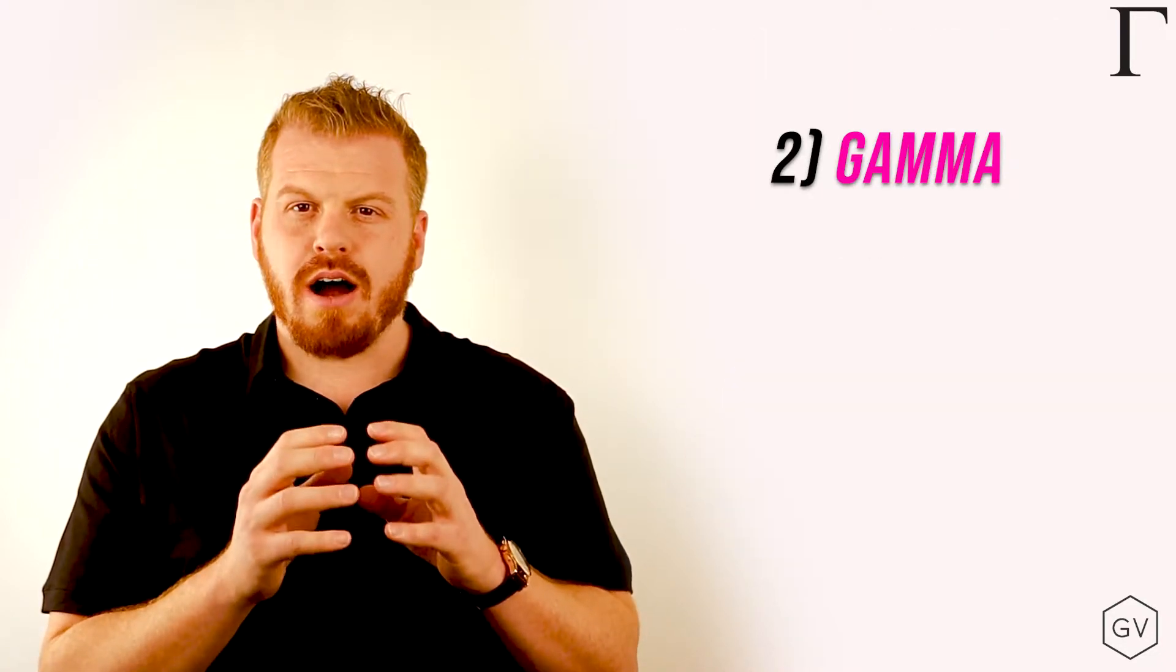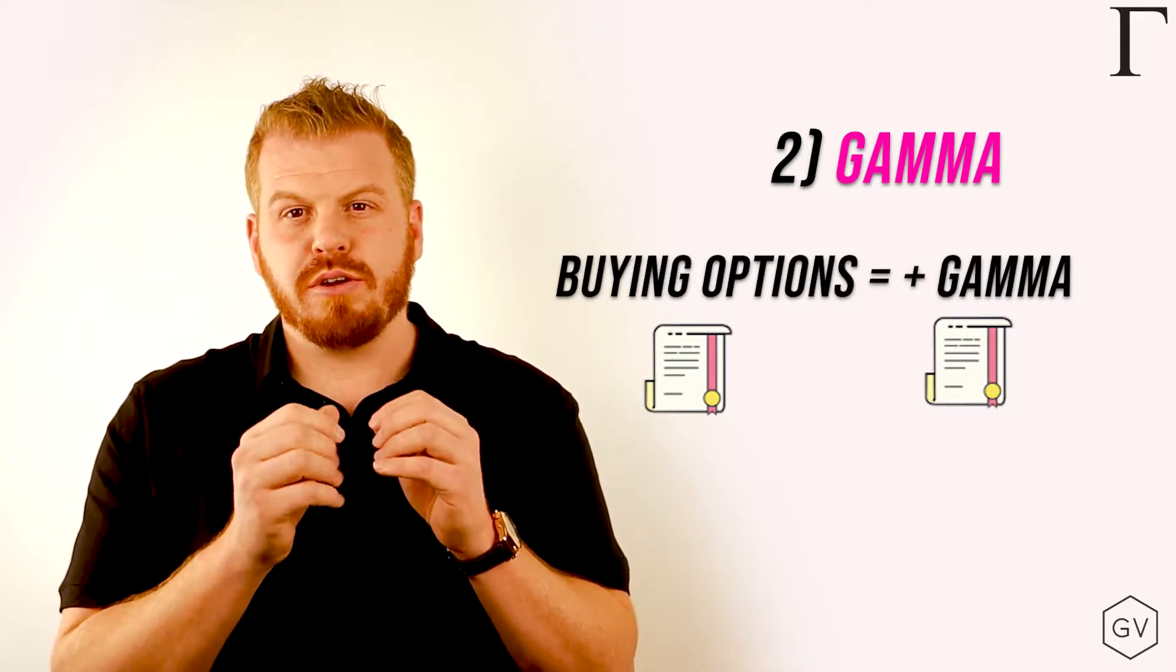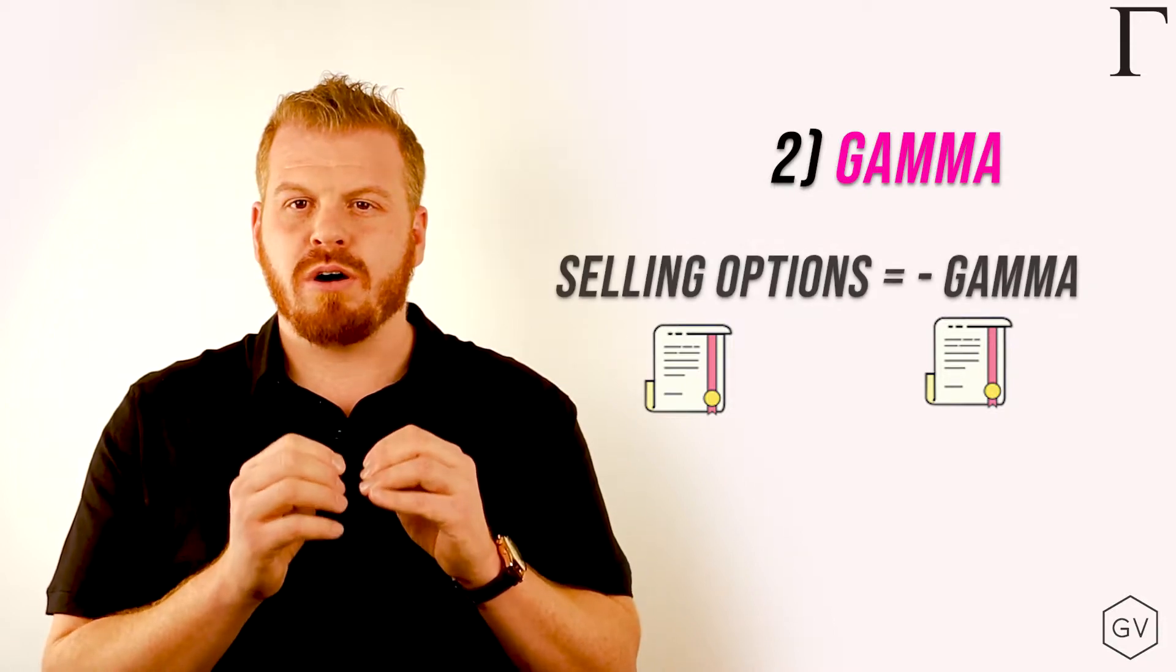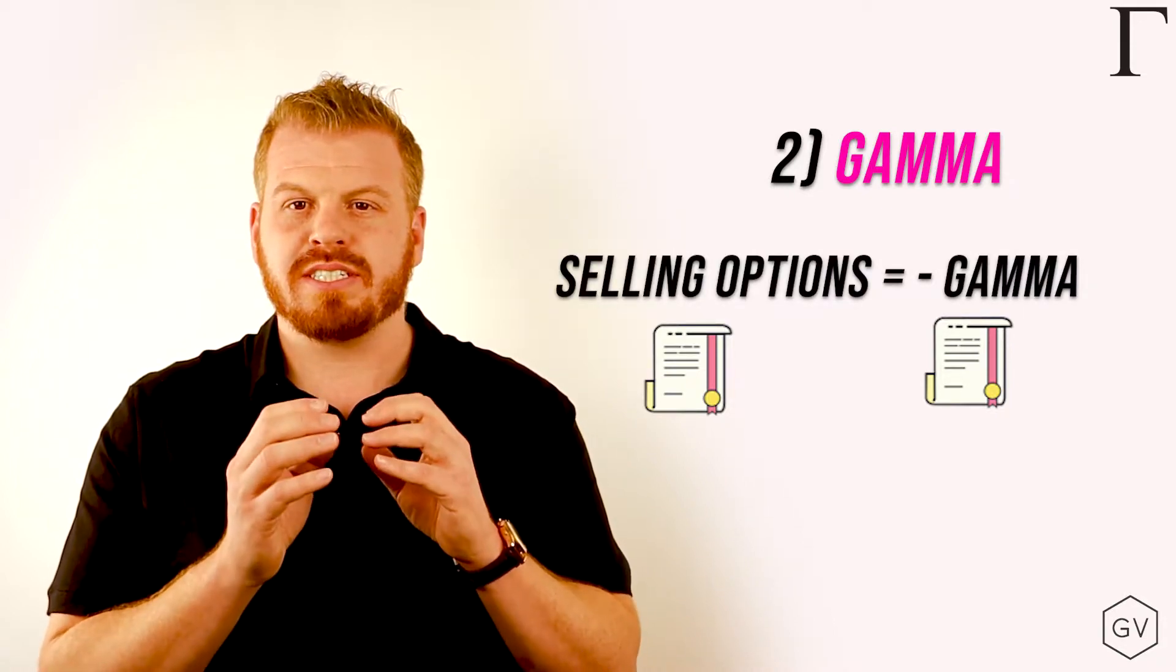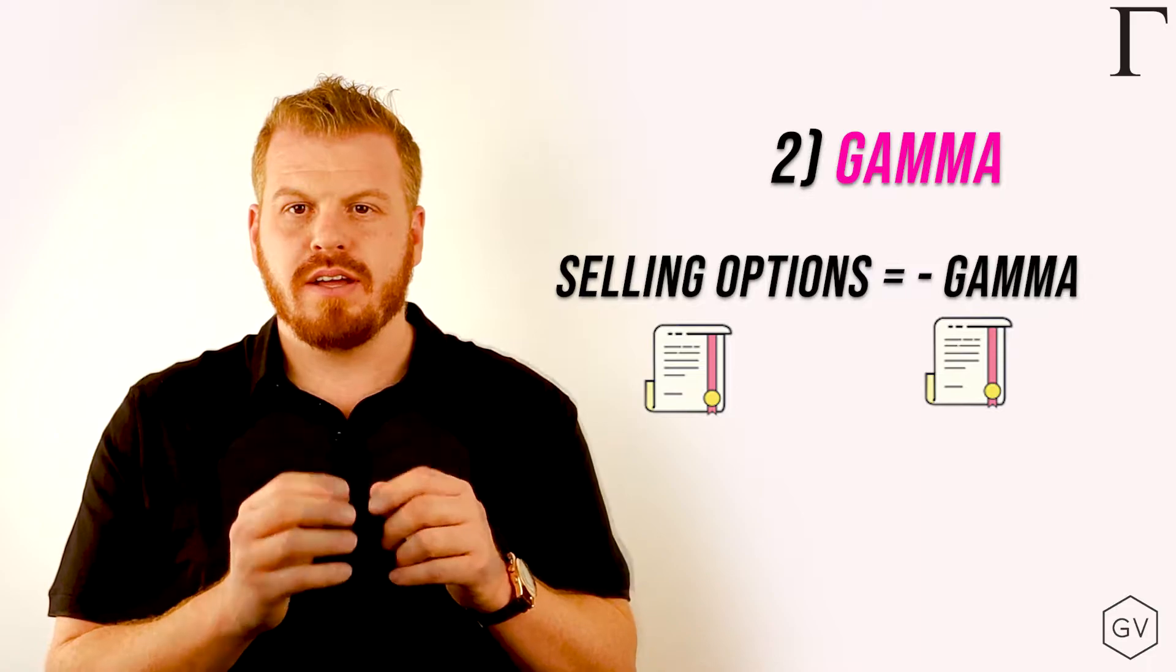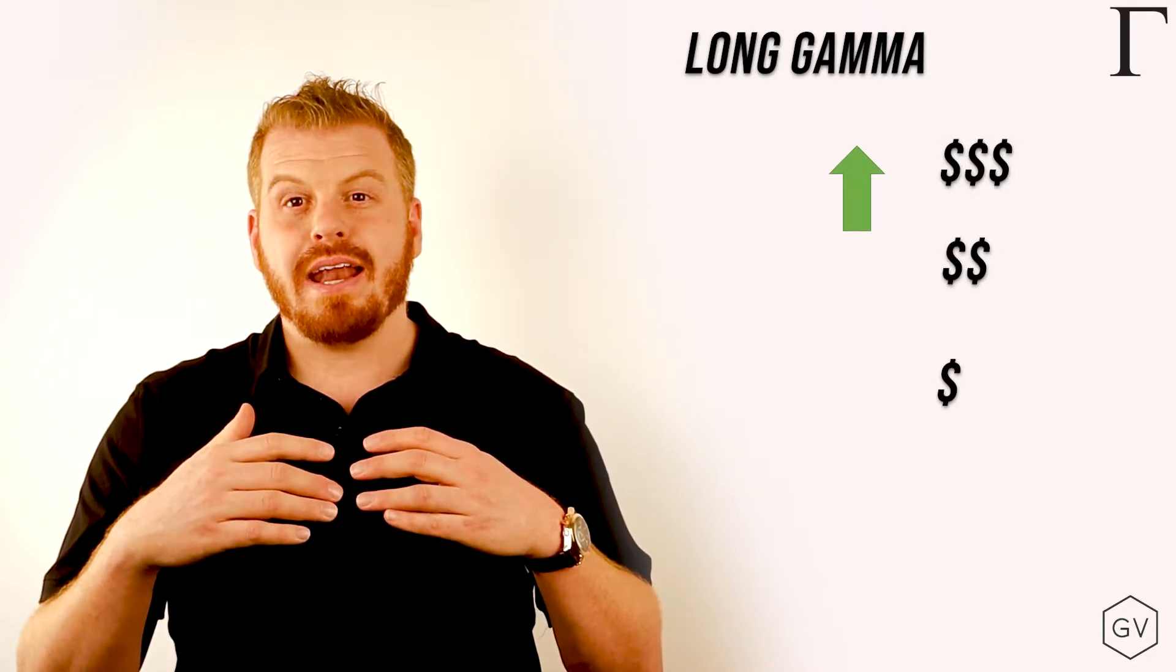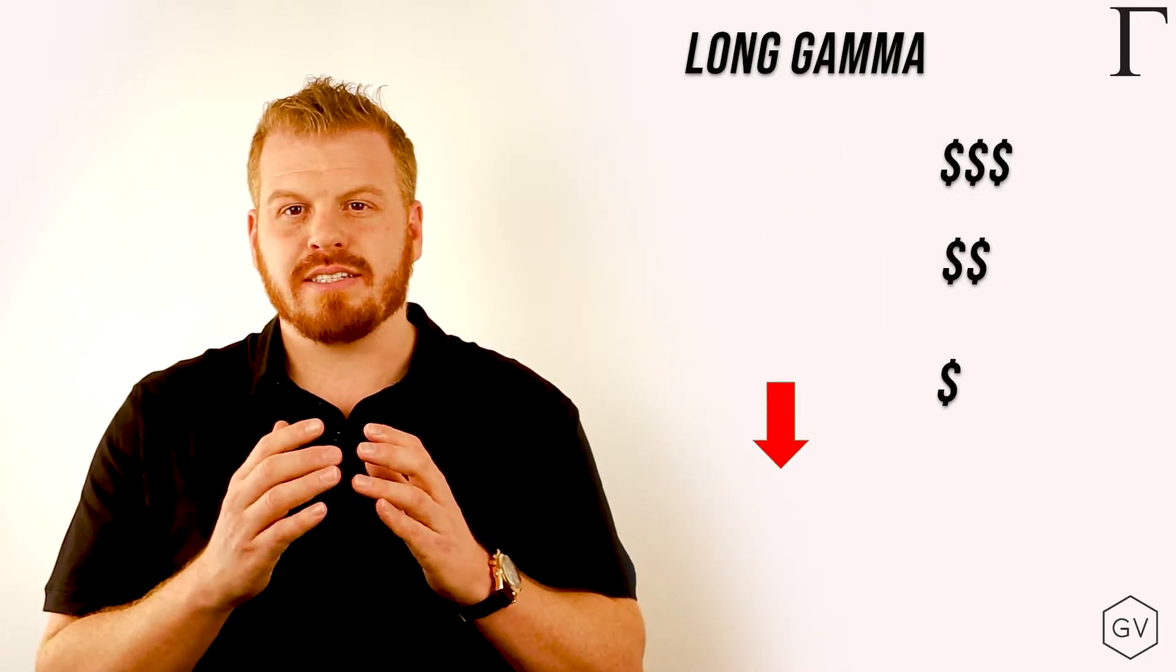If you buy options, you will always have a positive gamma, whether you buy a call or buy a put. And if you sell options, you will always have a negative gamma, whether you sell a call or sell a put. The beauty of being long gamma is that as the position goes in your favor, you get more and more exposure. And as it goes against you, you get less and less exposure.